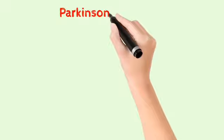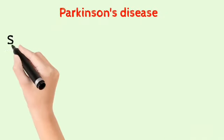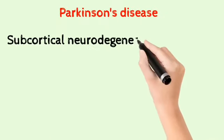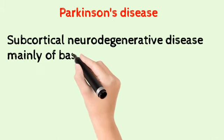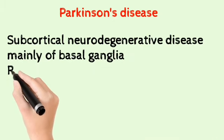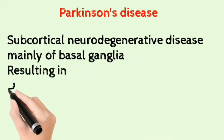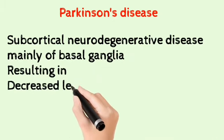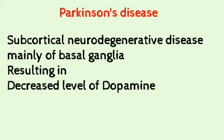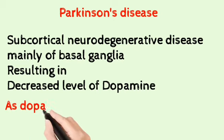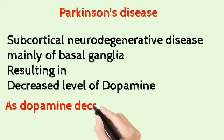The next disease is Parkinson's. Parkinson's is the most common subcortical neurodegenerative disorder, mainly occurring in the basal ganglia, leading to decreased levels of dopamine. As the dopamine levels tend to fall, acetylcholine levels increase.